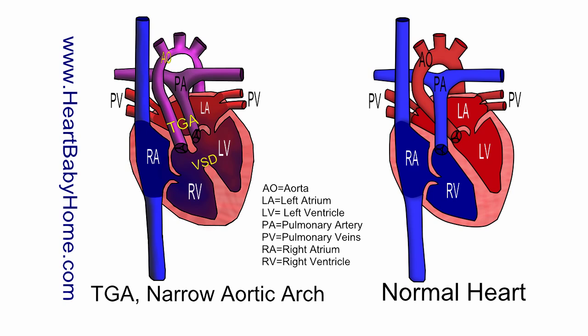Hey guys, this is Nanette with Heart Baby Home. Today we're looking at heart number 62: transposition of the great arteries with a VSD and narrow aortic arch.